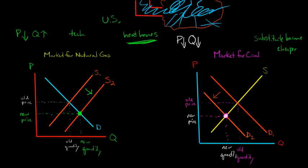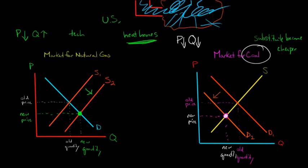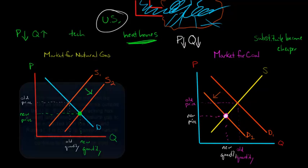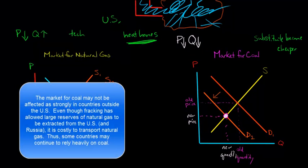What we've seen is that technology has made it easier to produce a lot more natural gas by extracting it from shale rock. Because natural gas can be used to heat homes, it's displacing some of the coal that used to serve that purpose — its price is dropping due to this big supply of natural gas. This has all happened since the beginning of the 21st century in the U.S. Now the price of coal is plummeting, the quantity is plummeting, and as a result we've been having bankruptcies of coal firms.